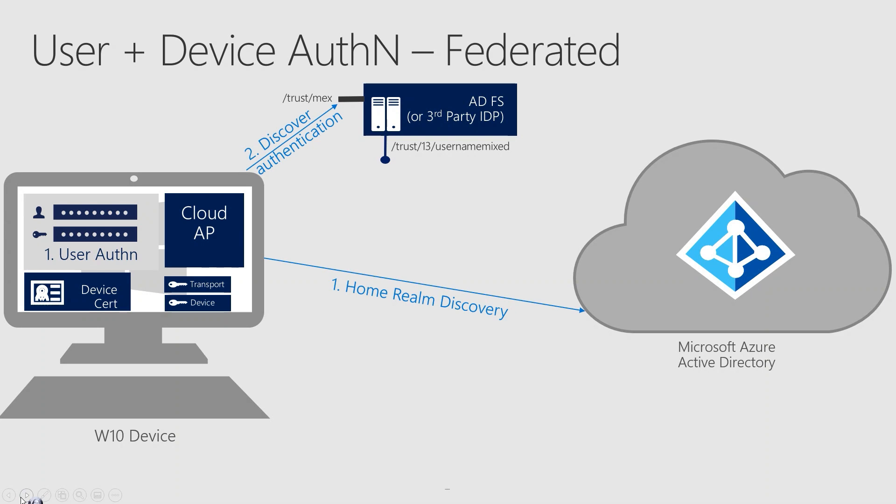On successful authentication, the identity provider returns the SAML token back to Cloud AP. Cloud AP now signs the SAML token with the private key of the device that was generated during device registration, and sends this as part of the request to Azure AD. One important thing to note is that Cloud AP does not have direct access to these keys. Instead, it invokes the Trusted Platform Module, or TPM, to sign the request. The TPM is a hardware crypto component on the device that securely stores these keys to prevent unauthorized access.